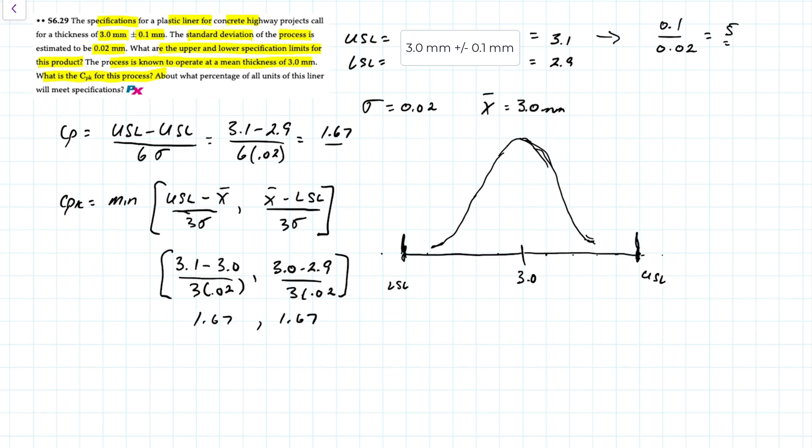With a CP of 1.67 and a CPK of 1.67, our curve will look something like this. If we had a CP and a CPK of 1.0, then it would look something like this where the tails of the curve touch the upper and lower specifications. But in our case our process is more capable than that.